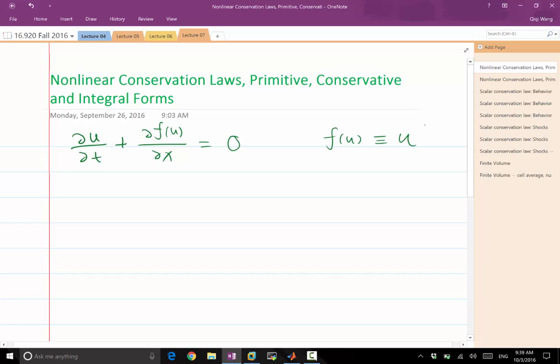And in this lecture, we'll just use a slightly different example. It's equal to u squared, for example. Actually, to make our life a little bit easier in the derivation, we make half of u squared. That's called the Burgers equation.